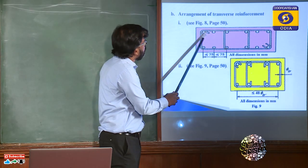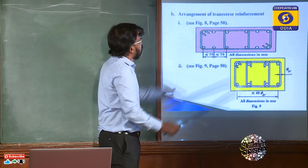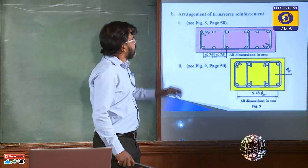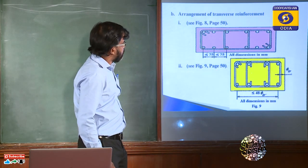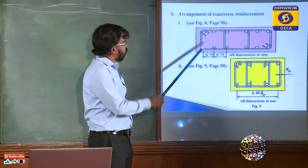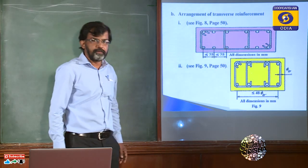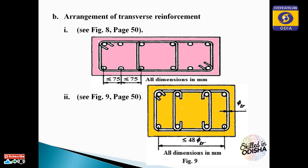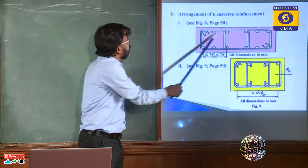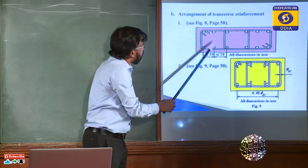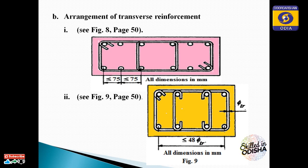Suppose here is a column with one, two, three, four, five and six longitudinal reinforcements on each side — six numbers in total. If the distance between two consecutive longitudinal reinforcements is less than 75mm, then the transverse reinforcement needs to go around the entire set of longitudinal reinforcement, and every alternate longitudinal reinforcement should again be tied by the transverse reinforcement.